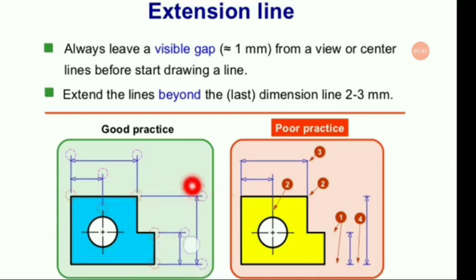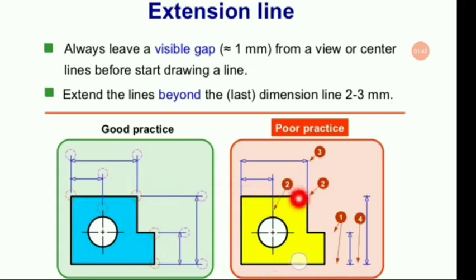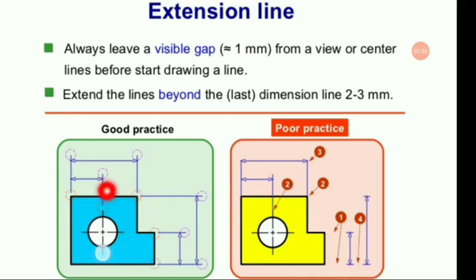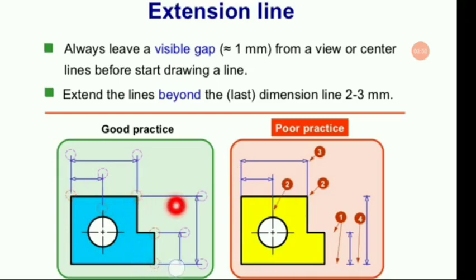The wrong system shows no gap — the extension line is attached directly to the drawing. You must follow the correct system: keep a visible gap of at least 1 millimeter from the drawing. These are the things to keep in mind while giving dimensions to a particular drawing.